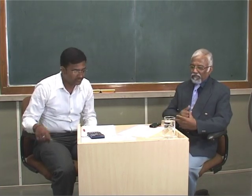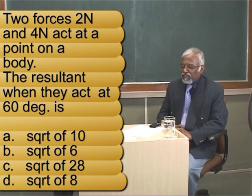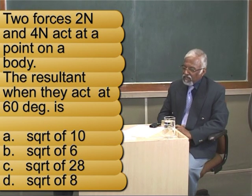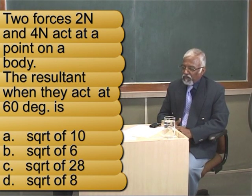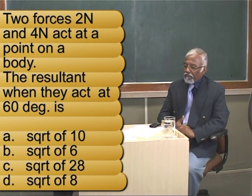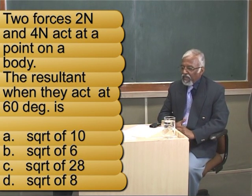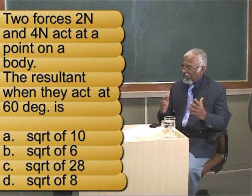So should we start? Yes. The first problem. Two forces 2N and 4N act at a point on a body. The resultant when they act at 60 degrees is: what is the resultant? Square root of 10, the first option. Square root of 6, the second option. Square root of 28, the third option. Square root of 8, the fourth option. Your time has already started.